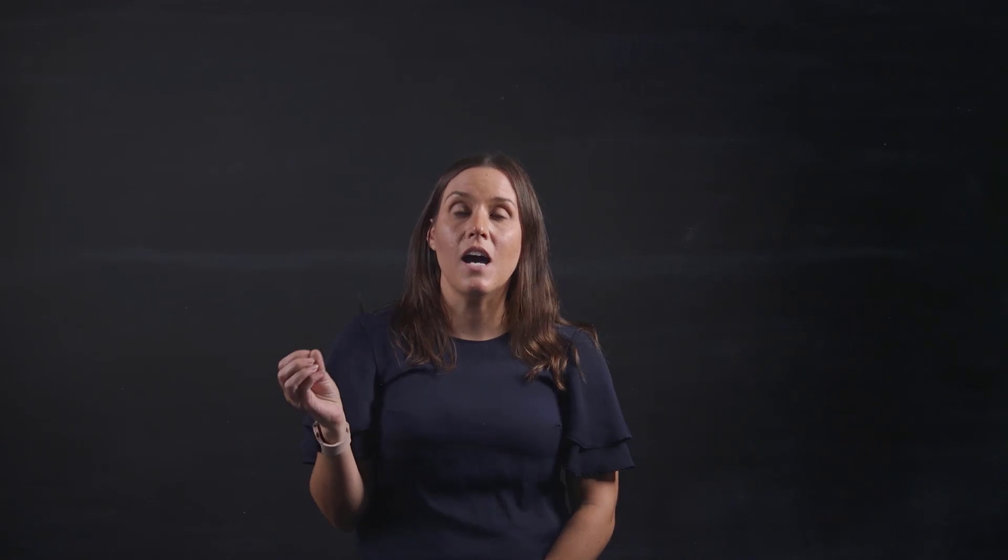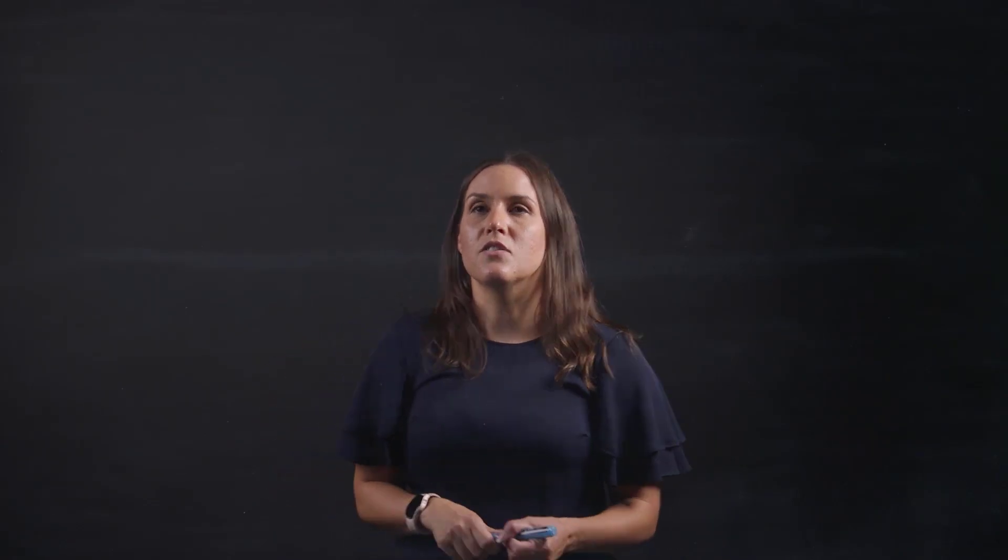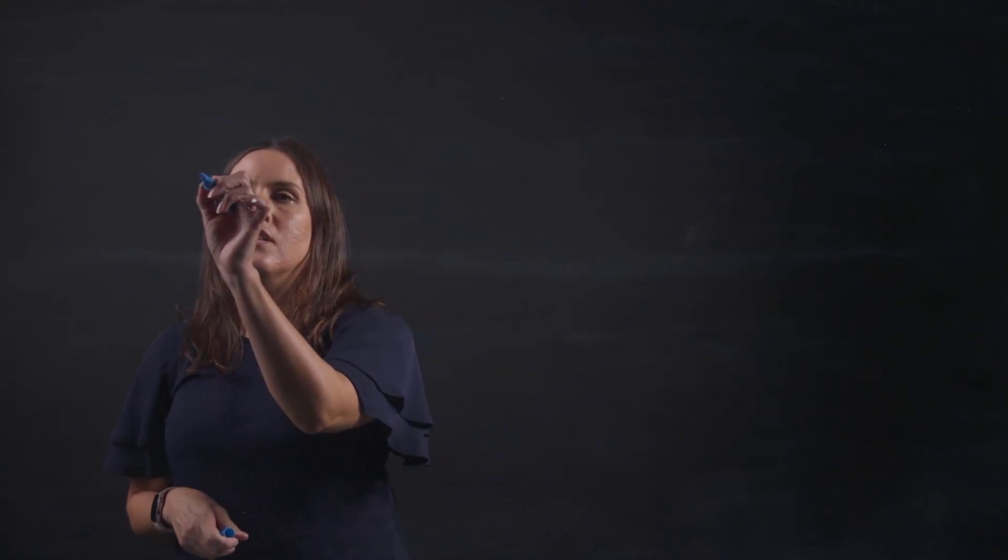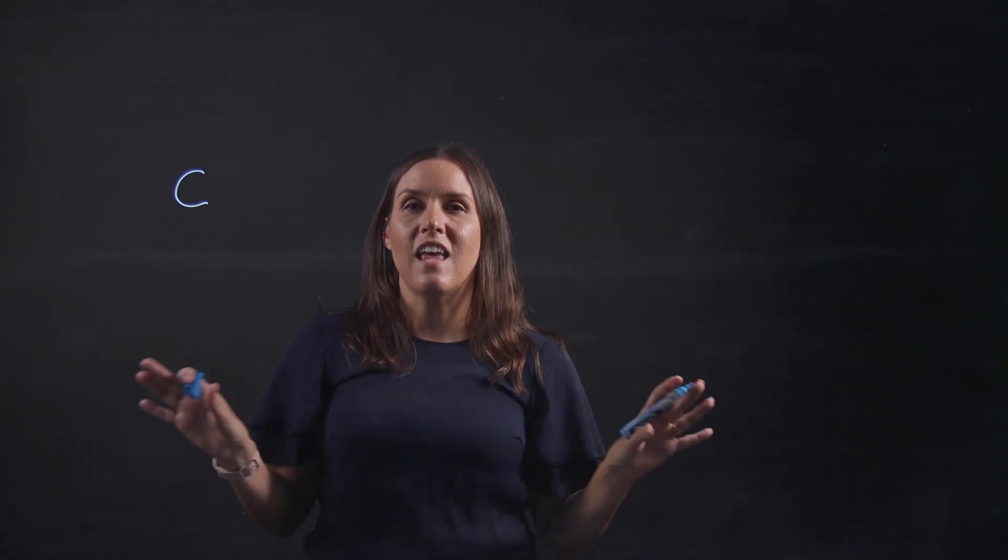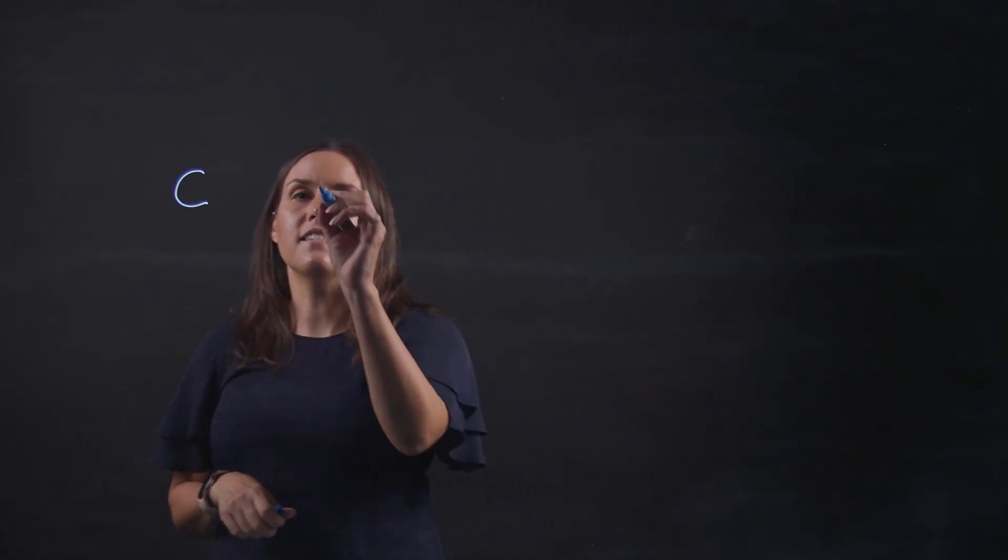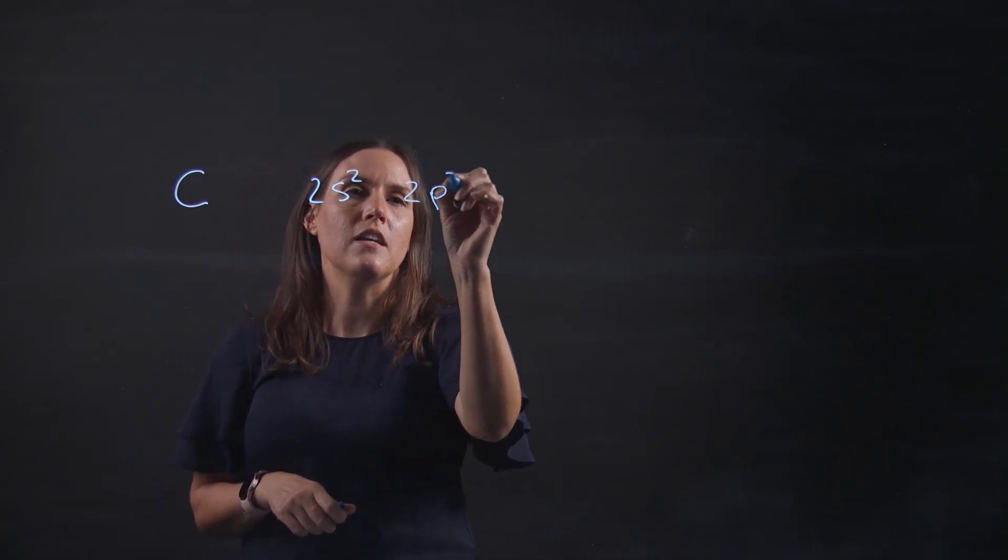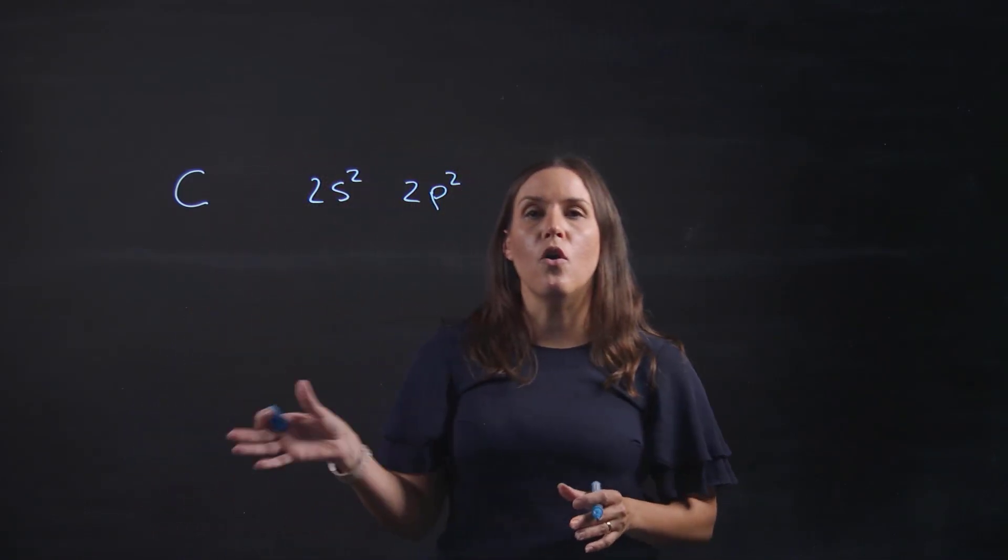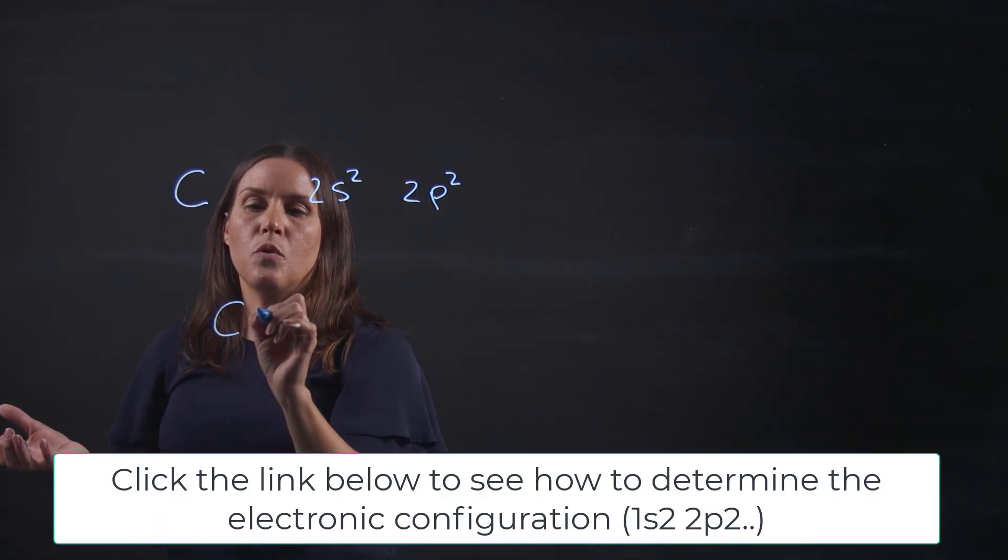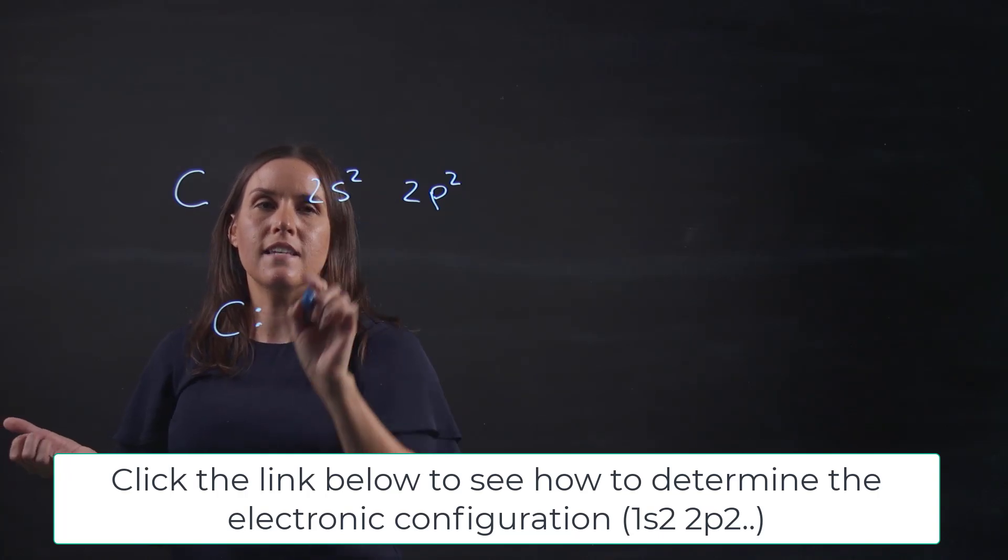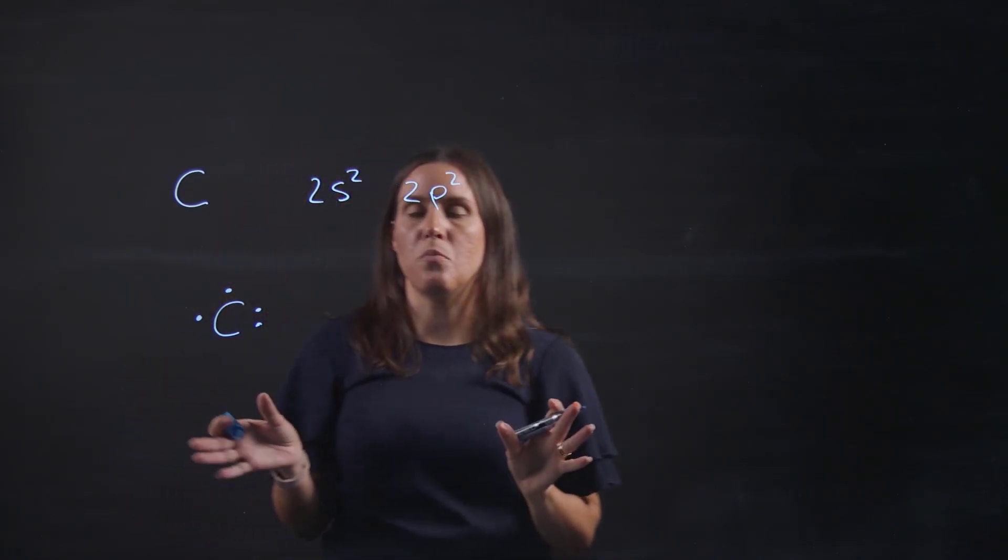For today I'm going to use carbon as the example element. Carbon in the valence or outer shell of the atom has a 2s² and a 2p². So there's four electrons available. If we do a Lewis diagram of that we would have two in the s and one, two in two separate p orbitals.